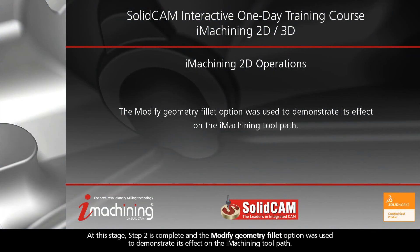At this stage, Step 2 is complete and the Modify Geometry Fillet option was used to demonstrate its effect on the iMachining toolpath.